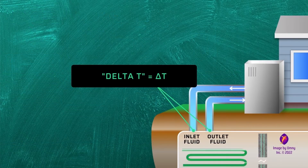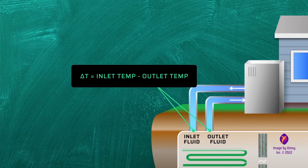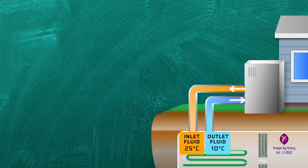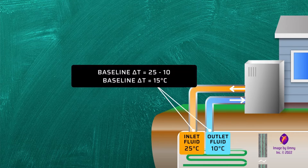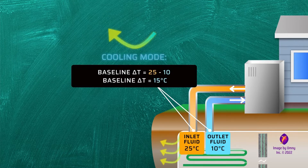A common term for this variable is delta T, and it is calculated as the inlet temperature value minus the outlet temperature value. We will call this the baseline delta T to refer to the original design value that we expect to see in our system. If the inlet fluid temperature is coming in warm at 25 degrees Celsius and exiting cool at 10 degrees Celsius, then our baseline delta T for this system is positive 15. This is because the equation for delta T is inlet temperature minus outlet temperature, not the other way around.